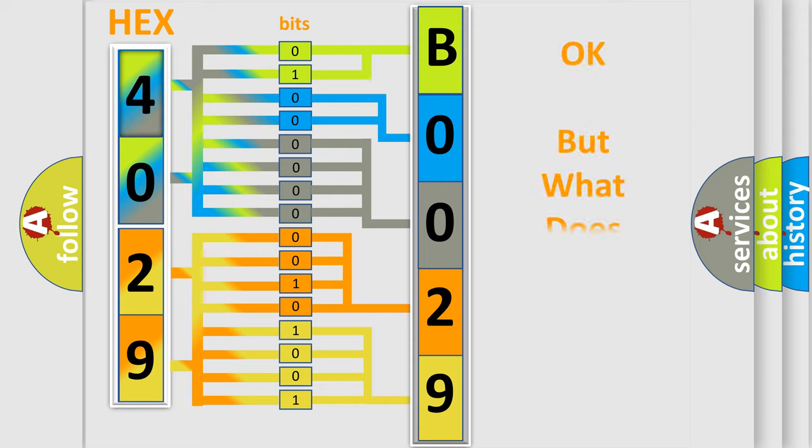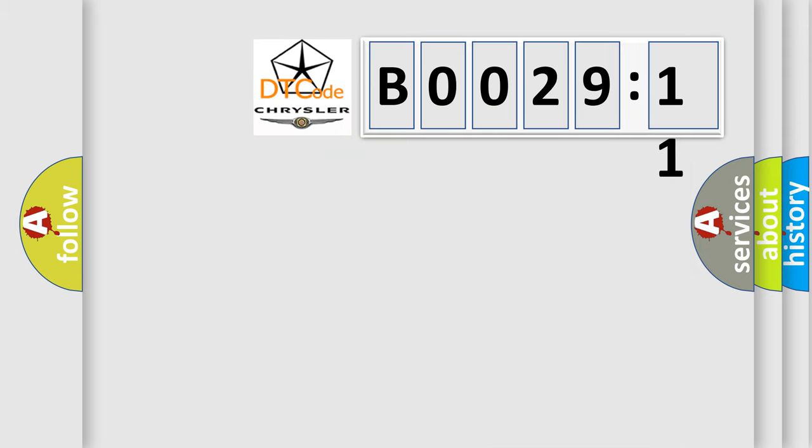The number itself does not make sense to us if we cannot assign information about what it actually expresses. So, what does the diagnostic trouble code B002911 interpret specifically?